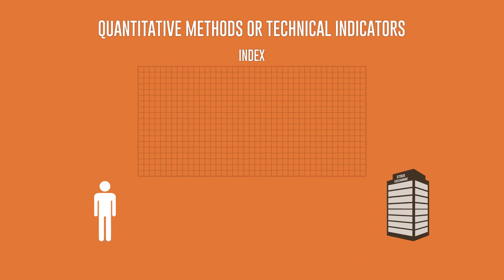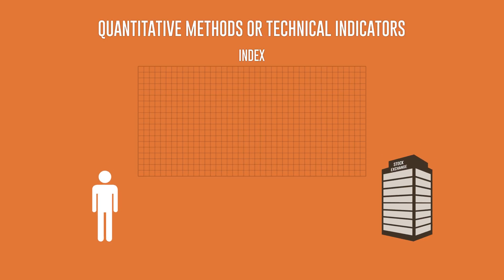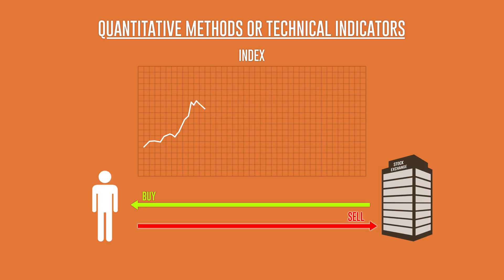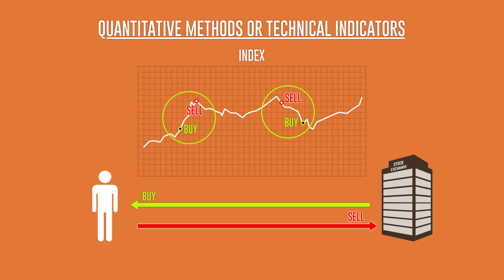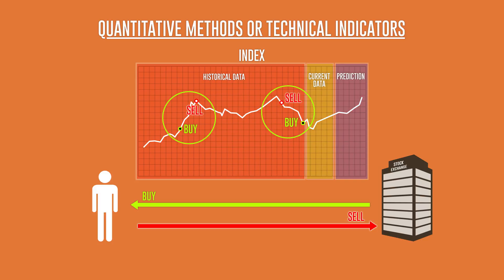One of the simplest strategies is simply to follow market trends, with buy or sell orders generated based on a set of conditions fulfilled by technical indicators. Basically, you base your algorithmic trading strategy on market trends, which you determine using statistics. This strategy can also compare historical and current data in predicting whether trends are likely to continue or reverse.